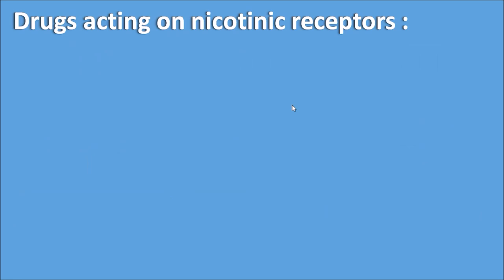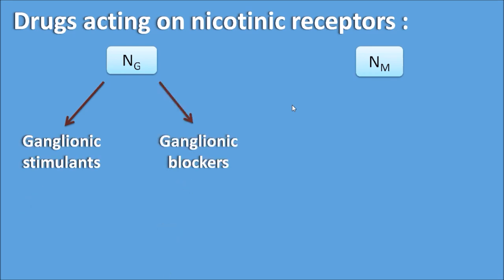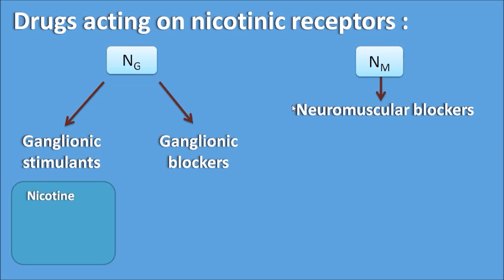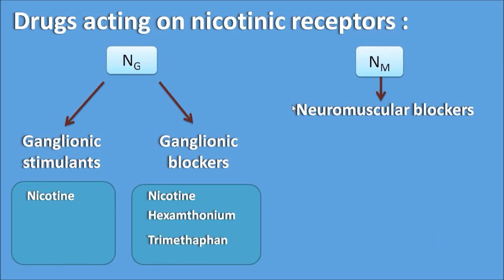Now let us see the drugs acting on the nicotinic receptors. We have drug targets for NG and NM types. On the NG type we have ganglionic stimulants and ganglionic blockers. Nicotine at low dose produces ganglionic stimulation, but at repeated dose it produces ganglionic blockade. Hexamethonium is a ganglionic blocker used nowadays as an experimental tool. Trimethaphan was previously used to control blood pressure and is also a ganglionic blocker. Ganglionic stimulants and blockers currently have very little therapeutic use.